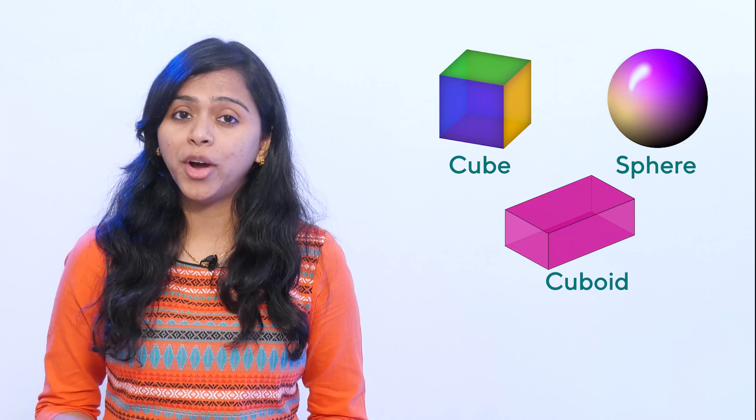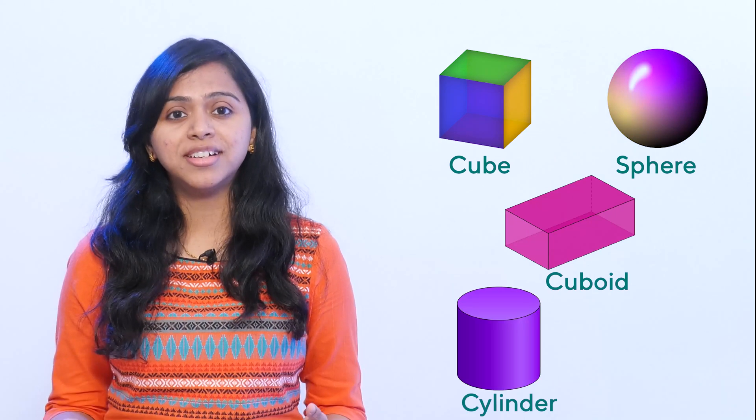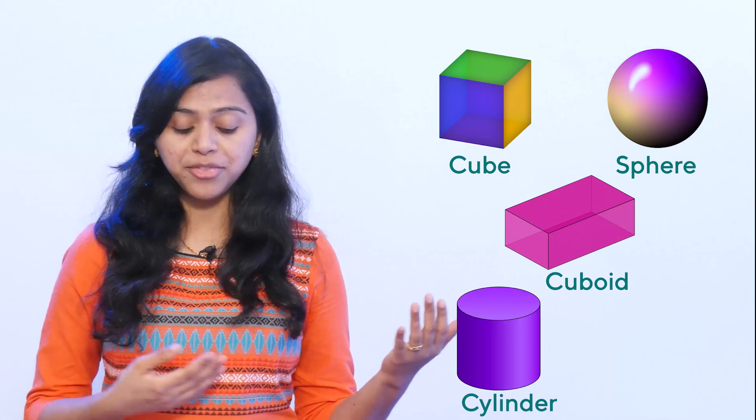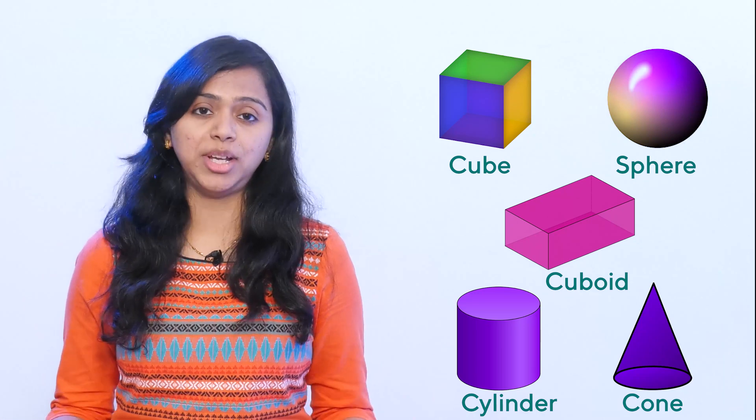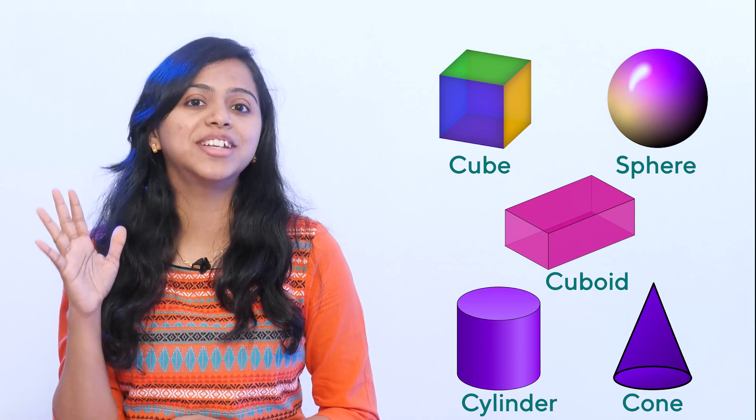The next thing we are going to learn is about solid shapes. So solid shapes are: we have cube, sphere, cuboid, cylinder, and cone. These are the five solid shapes. I'm going to show you a few things, and you have to guess and tell me whether they are a cube, cuboid, or cone.